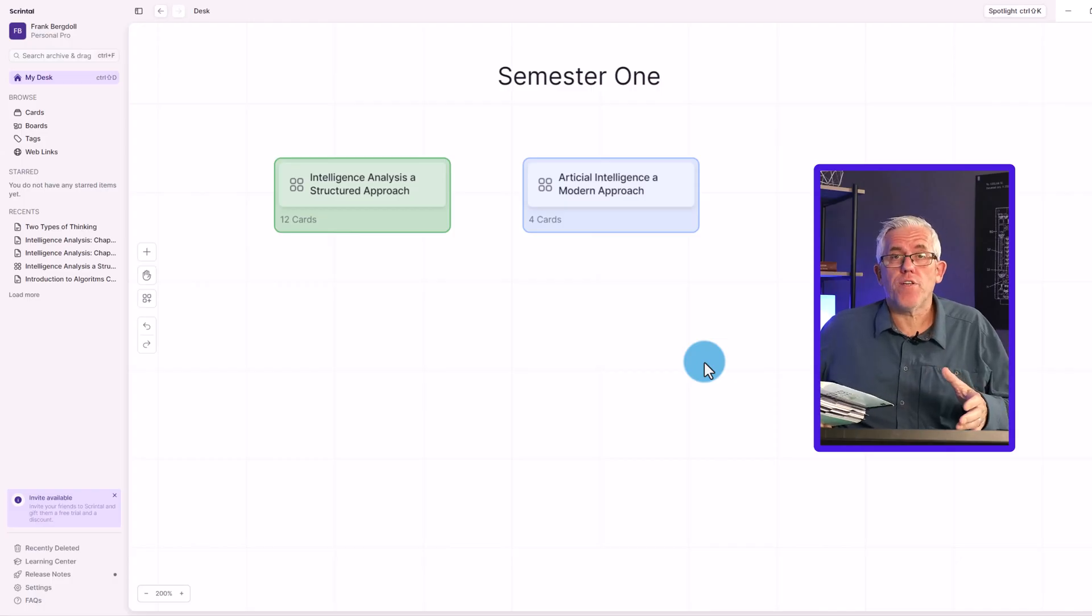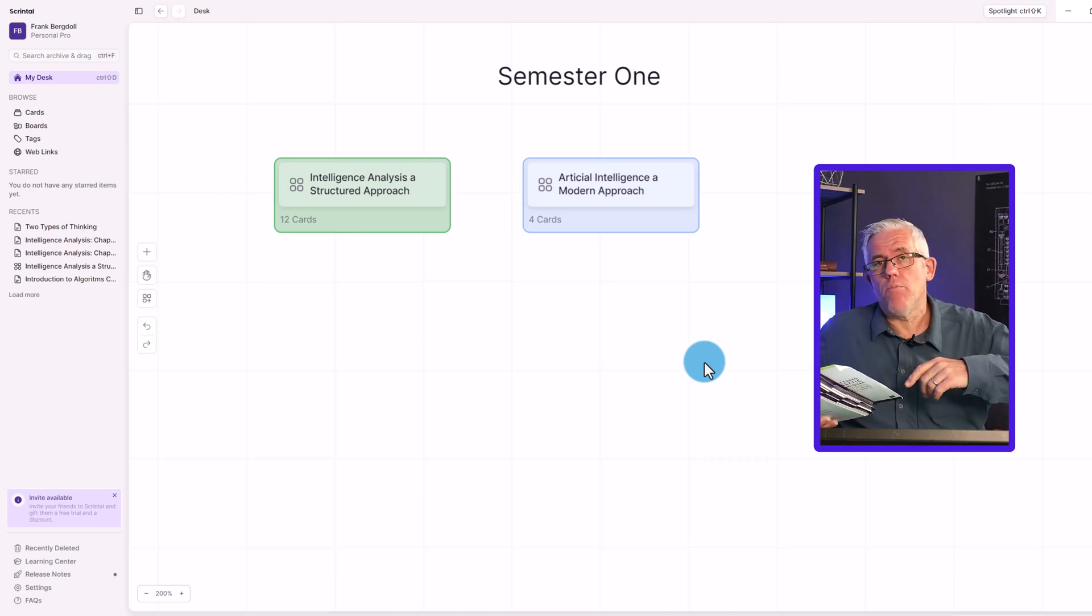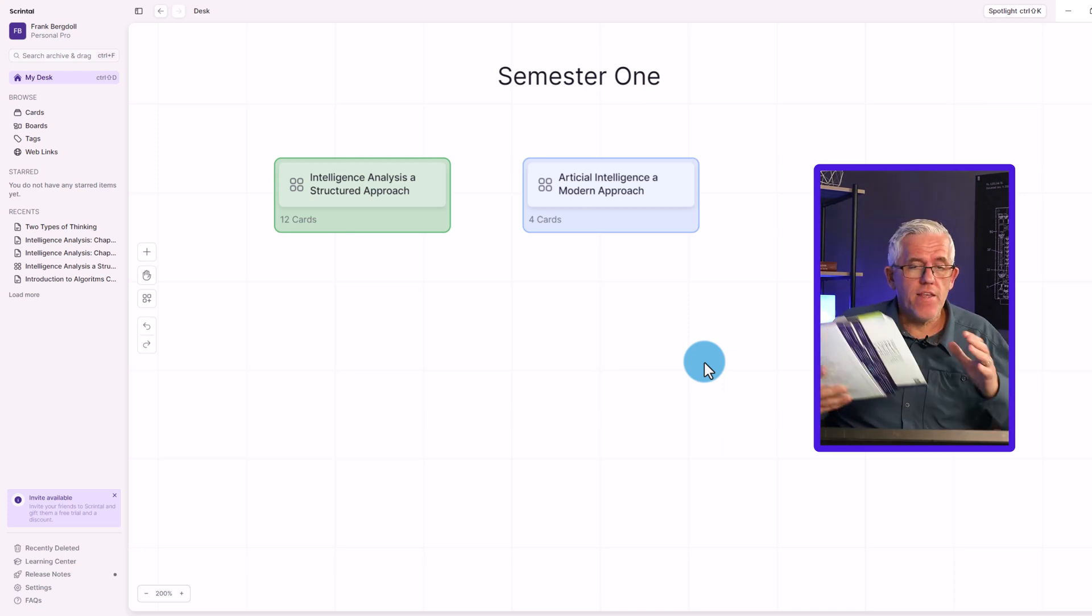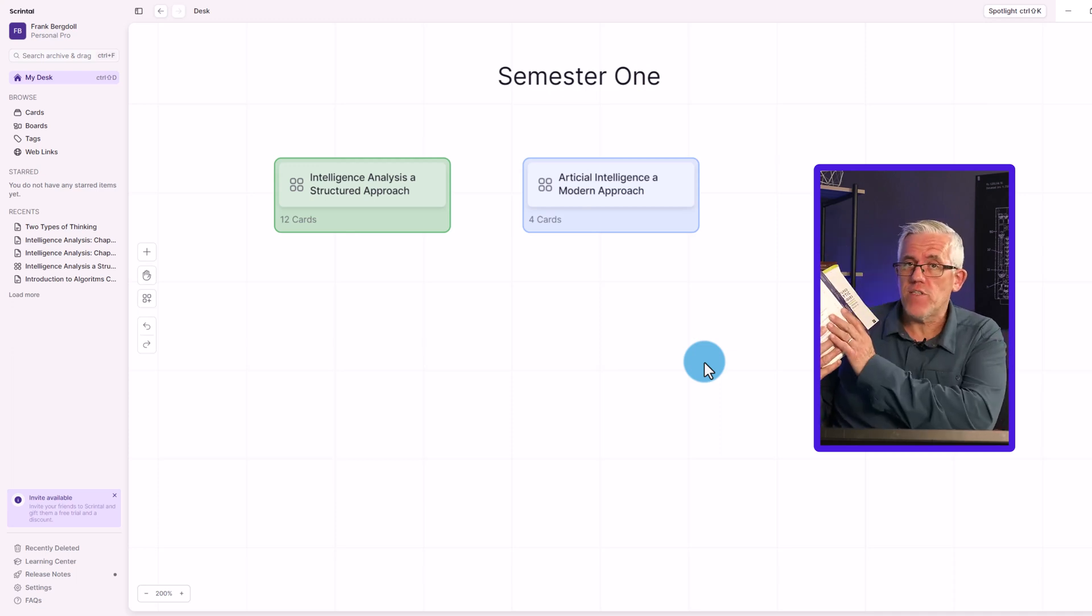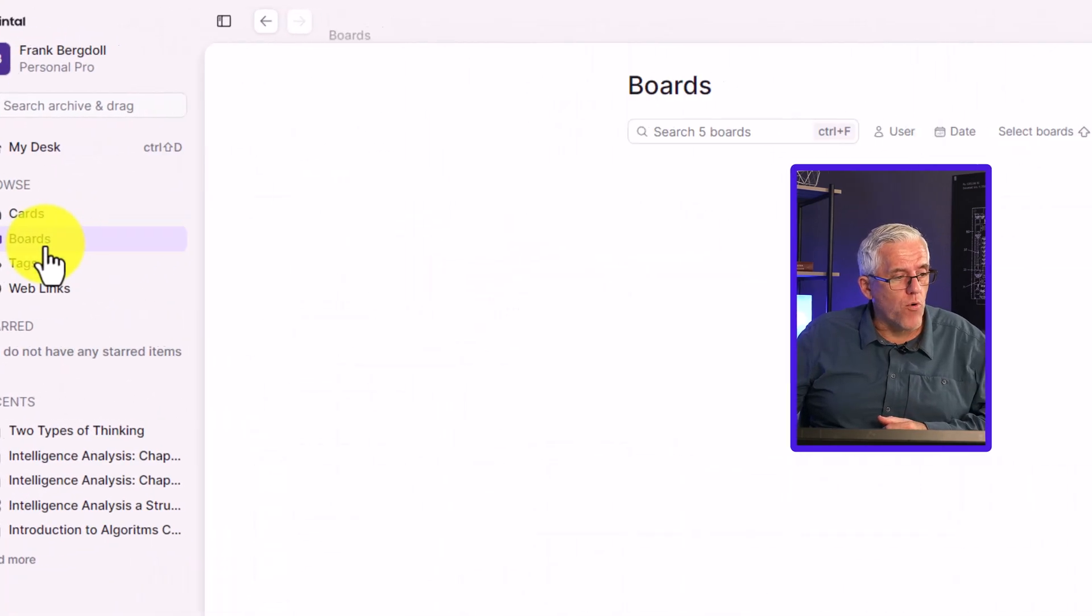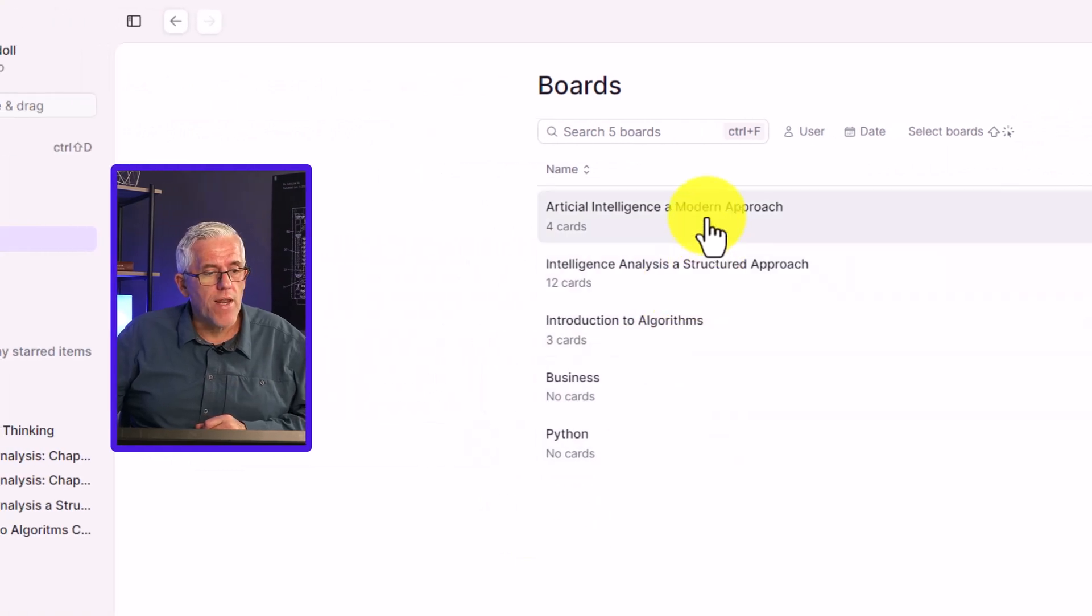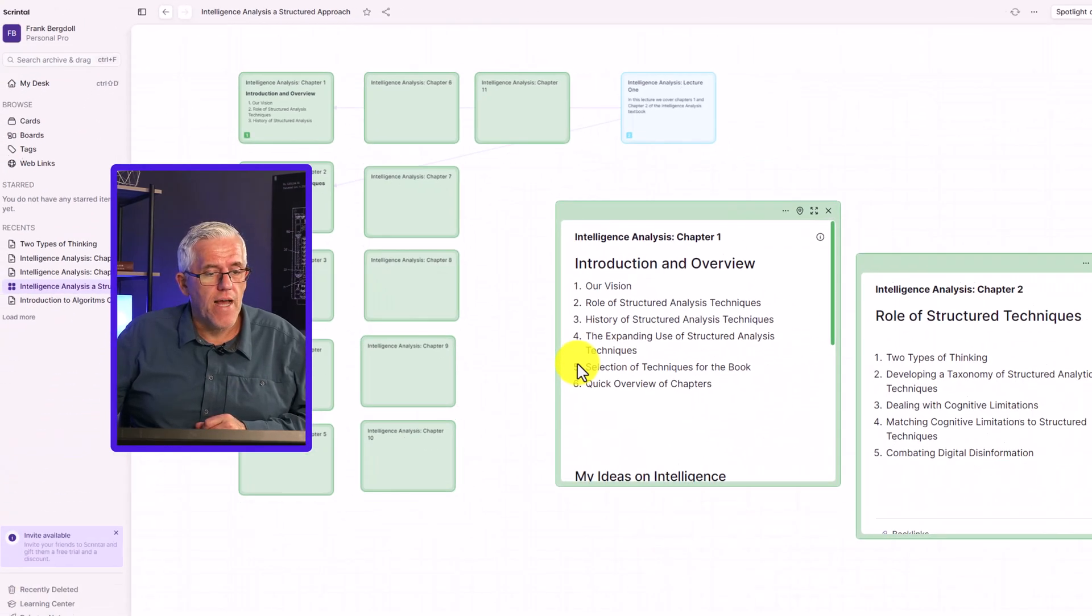So here I am logged into Scrintle. I've used a new account here just to keep things nice and clean for this demo. And I'll link down below to where you can get your own Scrintle account as well as to another video on the channel where I show you how to get started. In this video, I'm showing you how to connect information and take effective notes. So I have my first textbook on intelligence analysis. And what I do is I'll go to the table of contents. Then here in Scrintle, what I'll do is I'll go into my boards and I'll create a new board on each book.